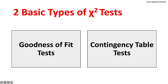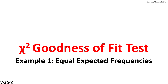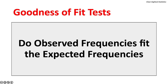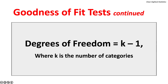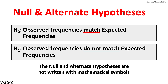The Chi-square goodness-of-fit test compares the distribution of observed frequencies to the distribution of expected frequencies to determine how closely the frequencies match or fit. This is sometimes called a one-way Chi-square test. Degrees of freedom equals K minus 1, where K is the number of categories. The null hypothesis states that the observed frequencies match the expected frequencies; the alternate hypothesis states they do not match.